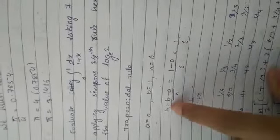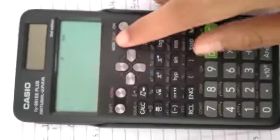The formula is h equals b minus a divided by n. We're going to see how we can calculate it.